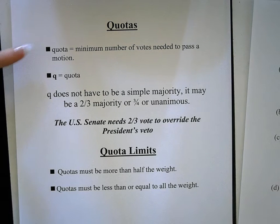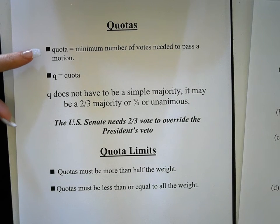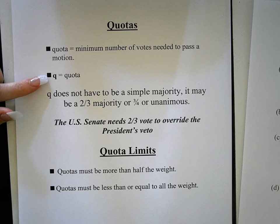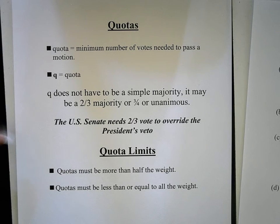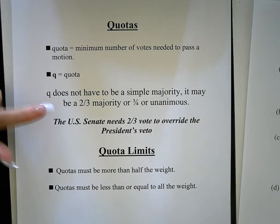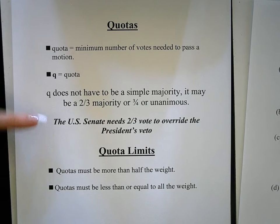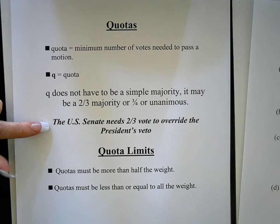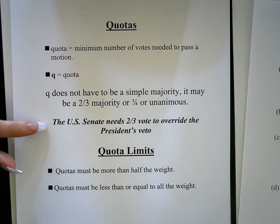Let's talk about quotas. Quotas are the minimum number of votes needed to pass a motion. We use the letter Q as a variable for quota. The quota does not have to be a simple majority — it may be a two-thirds majority, three-fourths, or unanimous. A fun fact: the US Senate needs a two-thirds vote to override the president's veto.